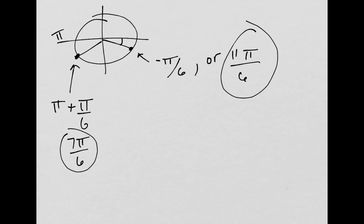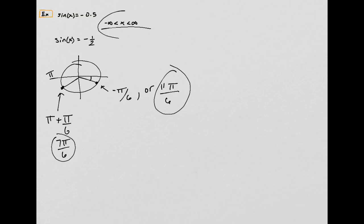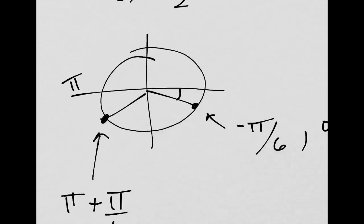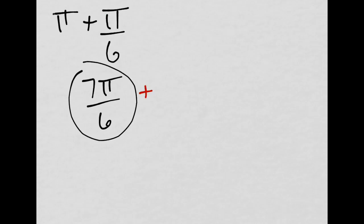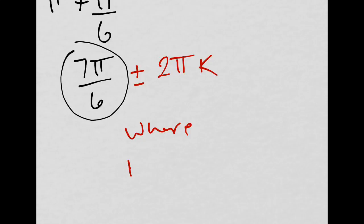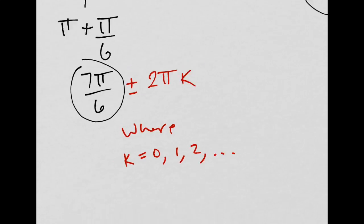So those are my two angles that I just circled, this one and this one. And I want all of them. How do I get all of them? Well, if I started here and added 2π, I would get back to the same answer. If I subtracted 2π, I would get back to the same answer. So this plus or minus 2πk, where k equals 0, 1, 2, and so on. That takes care of it.